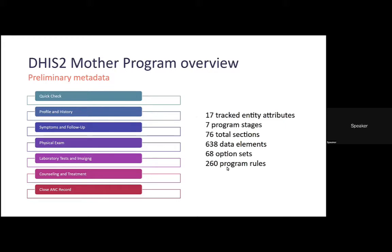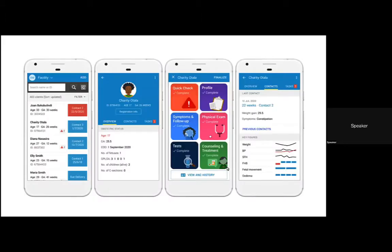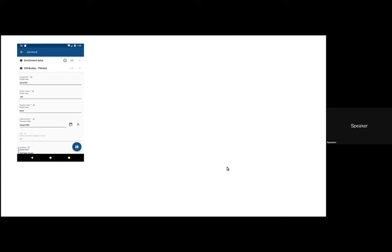We successfully integrated it into the DHIS2 program and model. For the DHIS2 program, there were preliminary metadata studies conducted for 17 DHIS2 tracker programs, not only to have different types of data elements, but also because we have a large number of programs we hope to develop to implement DHIS2 in compliance with our needs. Here are screenshots of what we undertook for the program rules.